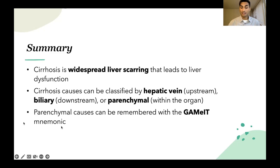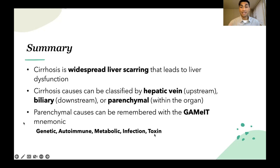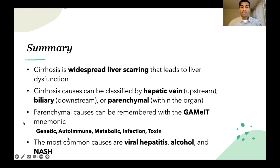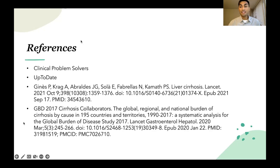We further classified parenchymal causes by remembering the GAMUT mnemonic, which stands for Genetic, Autoimmune, Metabolic, Infection, and Toxin. Lastly, we learned the most common causes of cirrhosis are viral hepatitis, alcohol, and NASH or fatty liver disease.